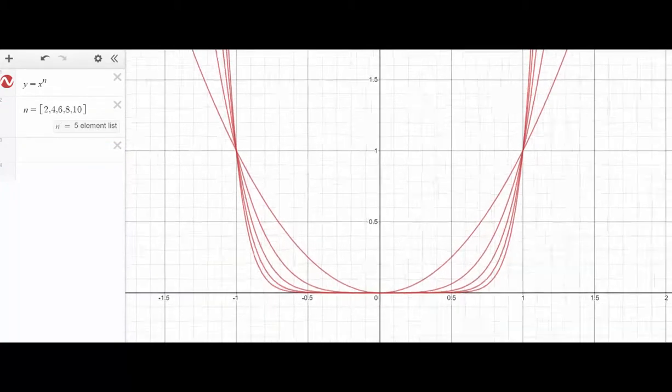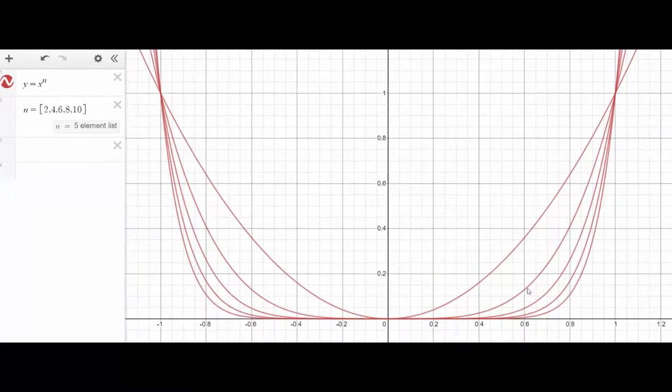And so, you can really compare and contrast the functions so that you see that this one on the top is x squared. And as the exponent gets larger for even powers, the growth is much slower in the interval from zero to one.